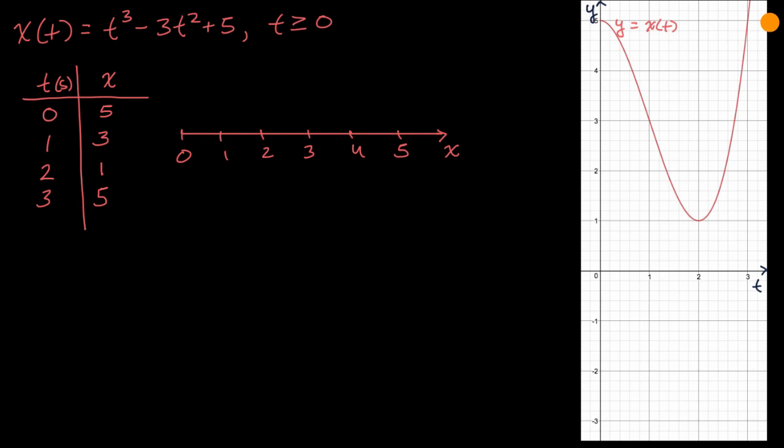Now an interesting thing to think about in the context of calculus is, what is our velocity at any point in time? Velocity is the derivative of position. So velocity as a function of time, you could view as the first derivative of position with respect to time. We're gonna apply the power rule and some derivative properties multiple times. This is going to be 3t² minus 6t, and we're going to restrict the domain for t greater than or equal to zero.